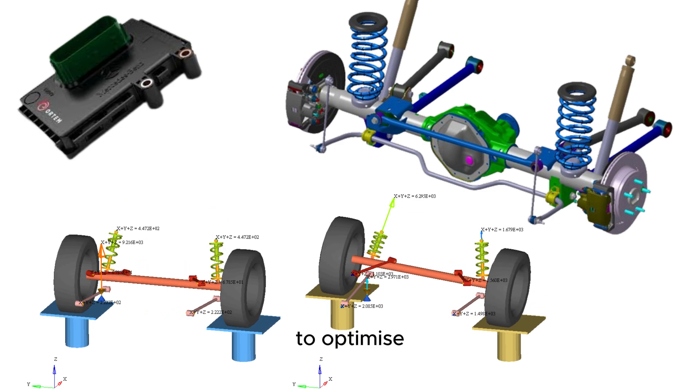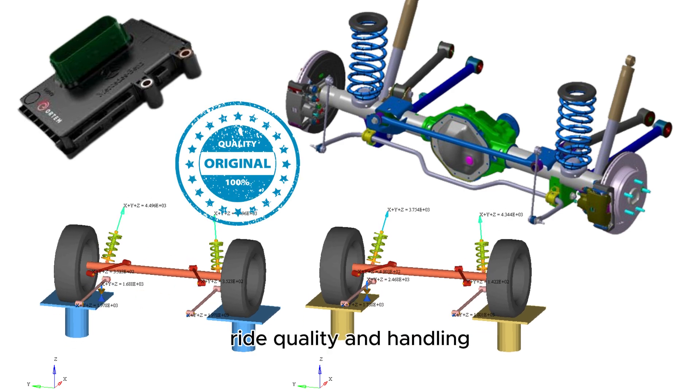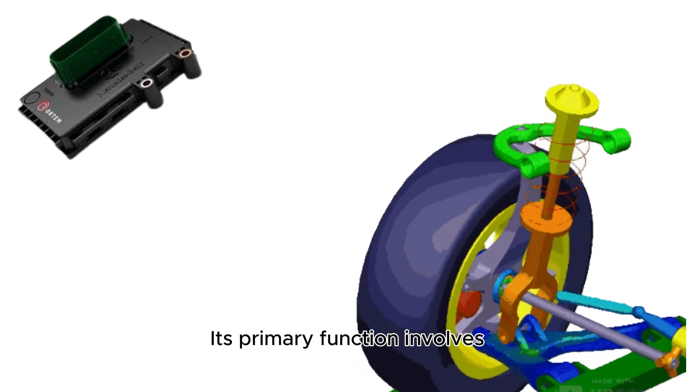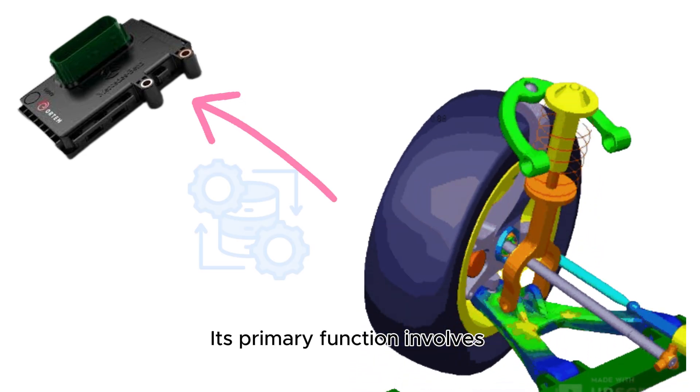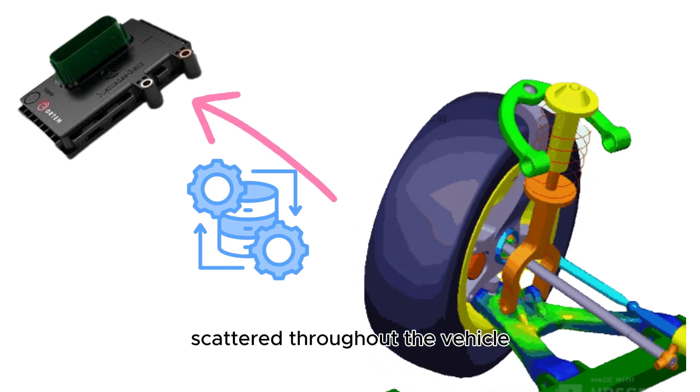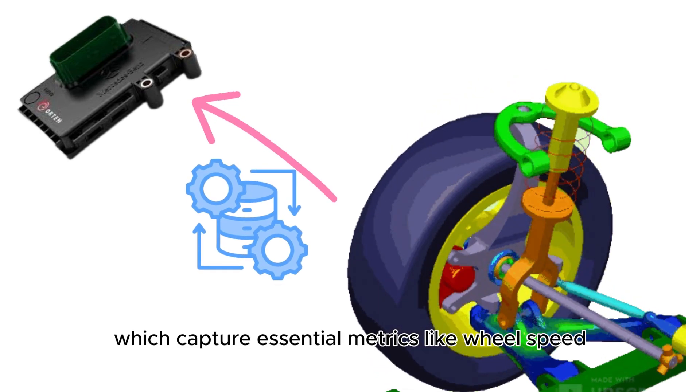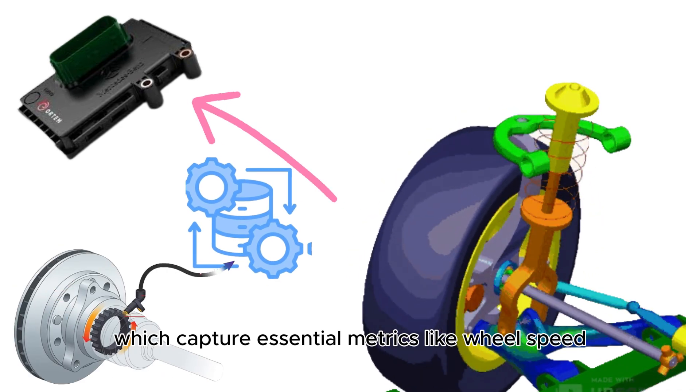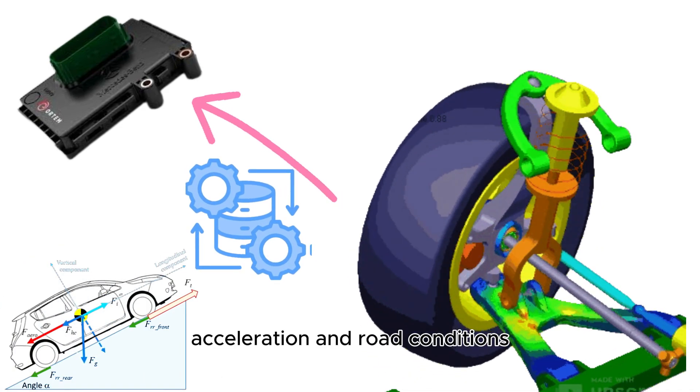This primary function involves processing data from sensors scattered throughout the vehicle, which captures essential metrics like wheel speed, acceleration, and road conditions.